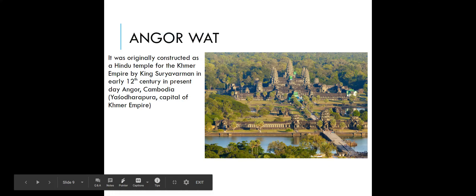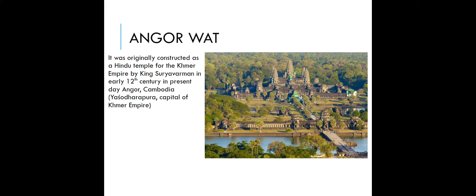Angkor Wat was originally constructed as a Hindu temple for the Khmer Empire in present-day Cambodia, dedicated to Vishnu — demonstrating the spread of religion from India into these regions. It transformed from a Hindu temple into a Buddhist temple in the 14th century and is the largest religious structure in the world that still operates as a religious structure.